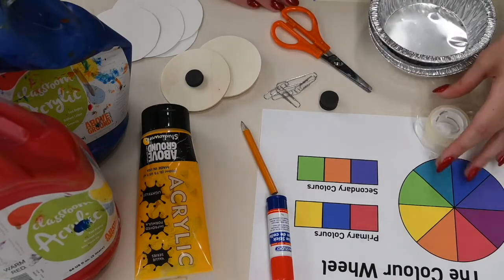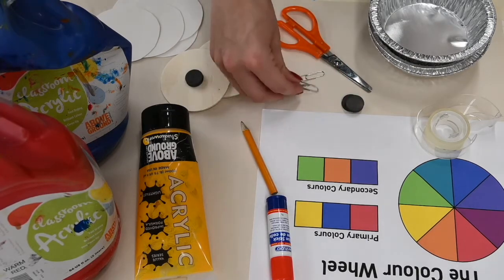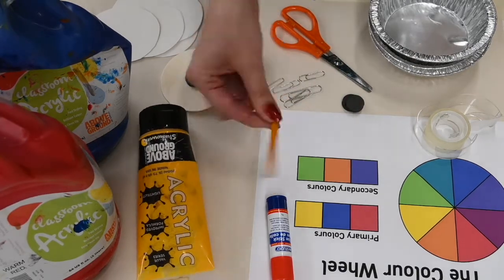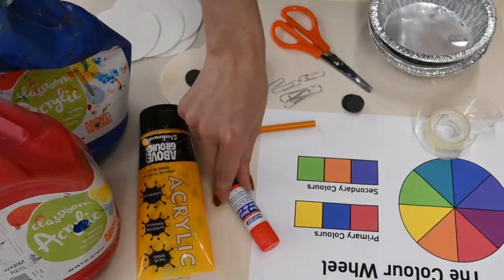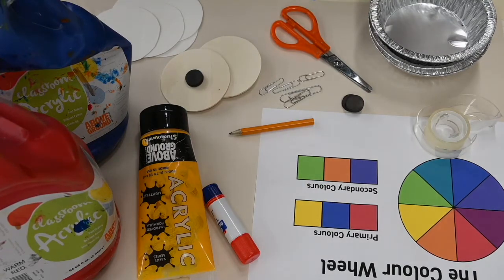Some tape, a magnet, some paper clips, a pencil, a glue stick, and finally our color wheel. So now that we know what we need, let's get started.